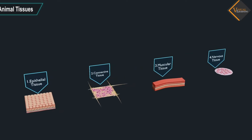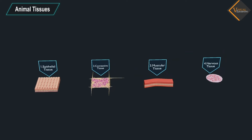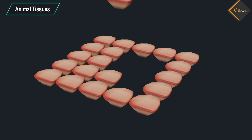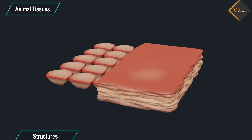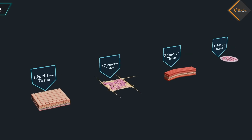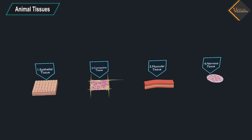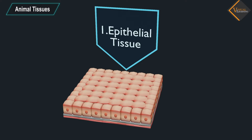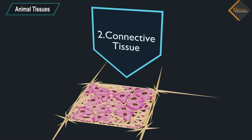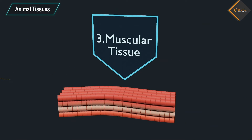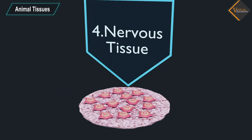In this video, we will understand about animal tissues. The animal cells are grouped together to form animal tissues. These tissues vary in their structure, function and origin. The animal tissues are divided into four types: Epithelial, Connective, Muscular, and Nervous Tissues.